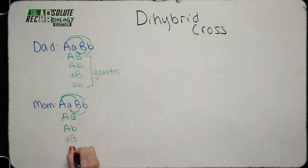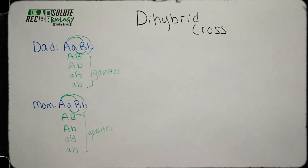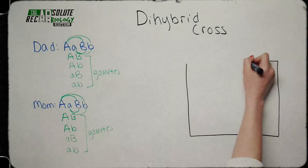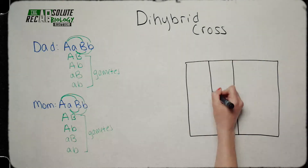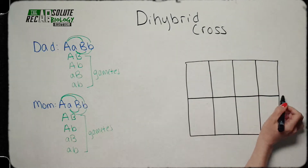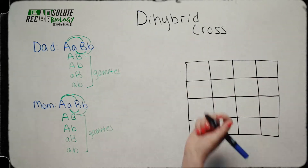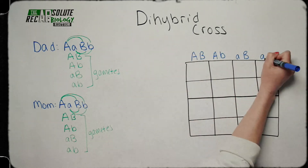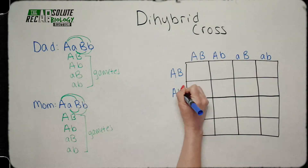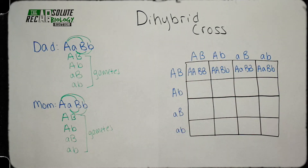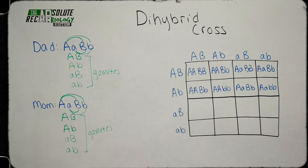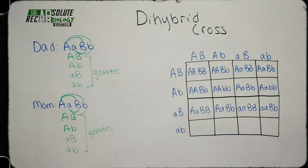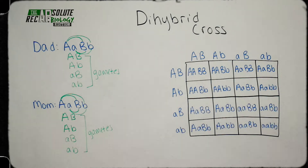Before you start, foil the parental genotypes to determine the possible gametes. Next, place the parental gametes across the top and side of the Punnett square. Then, distribute the alleles into each offspring box, recombining homologous chromosomes.